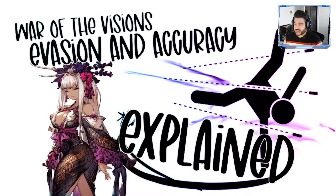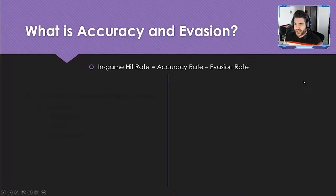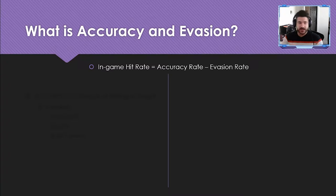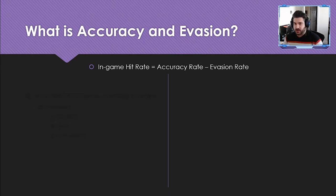Let's jump into it. What is accuracy and evasion? The formula is very simple: you calculate a percentage based upon your stats, and then it's the accuracy percentage rate minus the evasion percentage rate. That's it in a nutshell — not terribly difficult conceptually, even if some of the math looks intimidating at first glance.